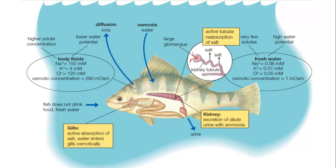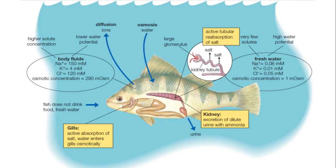Here we have an image showing how freshwater fish produce nitrogenous waste. They live in an environment low in salts, so they are constantly gaining water by osmosis. As a result, they excrete large amounts of water but work hard to reabsorb salts, which they need to retain rather than expel to their environment.